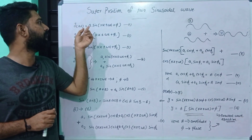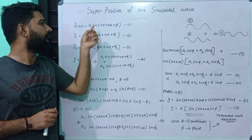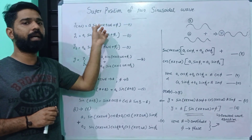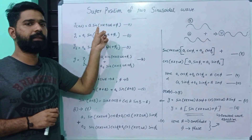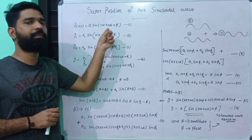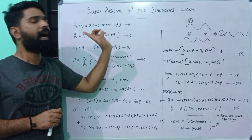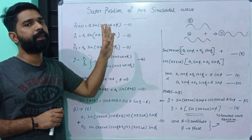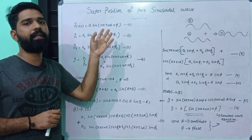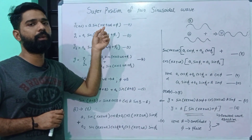We are going to consider a position. A is the amplitude of the wave. K is the wave number. Omega is the angular frequency. φ (phi) is the phase. So we are going to consider kx plus or minus omega t.